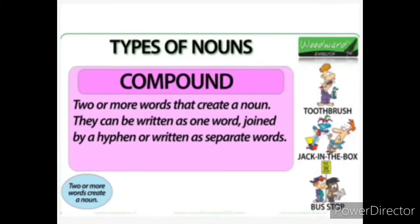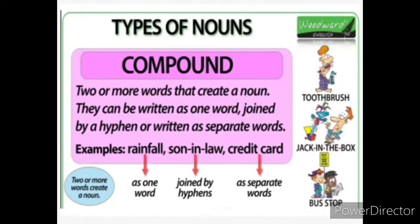Now the next one: compound noun. A compound noun is made of two or more words that create a noun. They can be written as one word, joined by a hyphen, or written as separate words. Compound noun means joining two words together. For example, 'rainfall' — it has two words: rain and fall joined together. 'Son-in-law' — joined with hyphens: son-hyphen-in-hyphen-law. 'Credit card' — two separate words — also comes under compound noun. Other examples: toothbrush, jack-in-the-box, and bus stop are compound nouns.